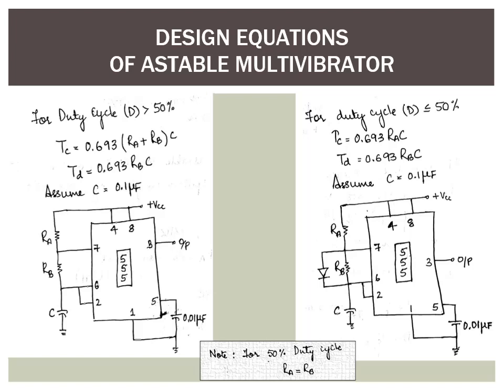One important point: when computing for a duty cycle of exactly 50%, the values of the two resistances Ra and Rb will be equal. Note this carefully when solving numericals, because for exactly 50% both resistances are the same. The capacitance connected between pin 5 and pin 1 will always be set equal to 0.01 µF.